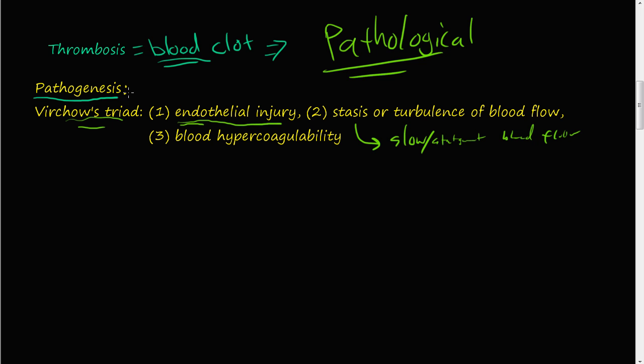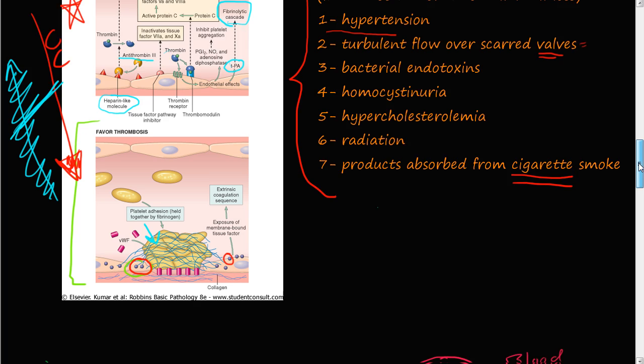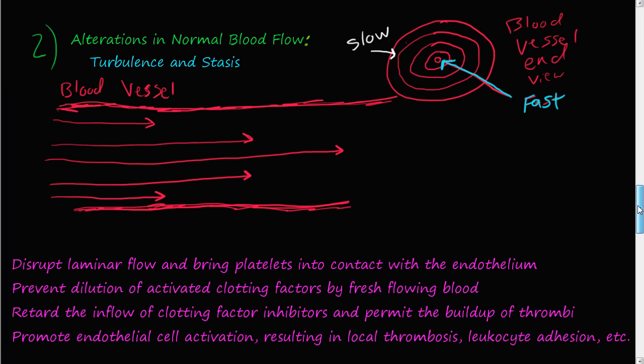In this video we're going to continue our discussion of thrombosis and we've talked about endothelial injury of Virchow's triad, and now we're going to talk about stasis and turbulence of blood flow. So let's scroll down here.